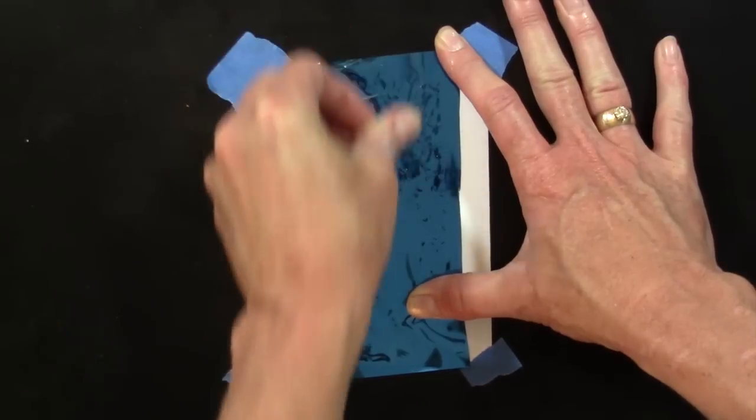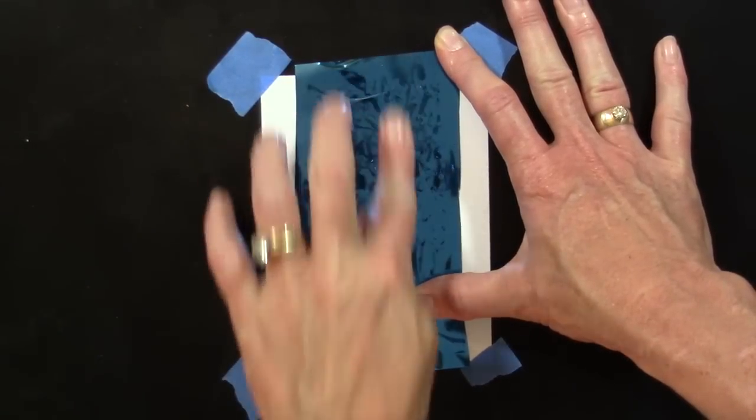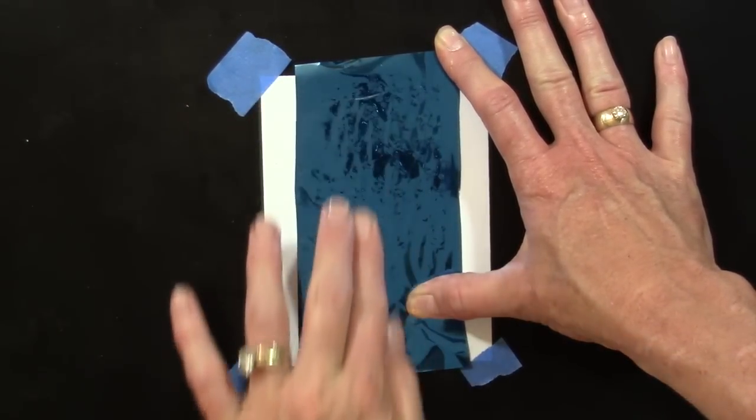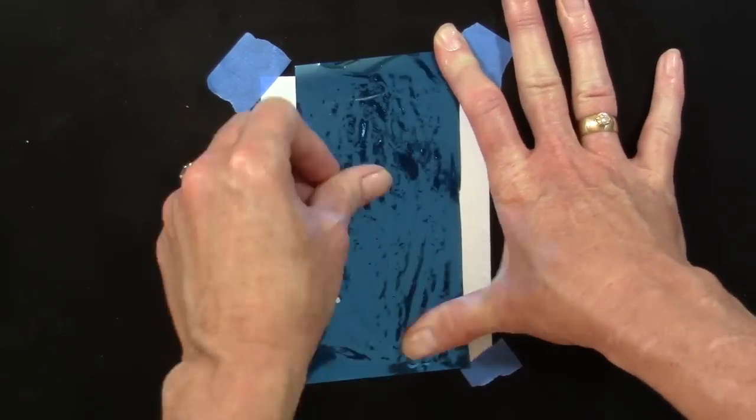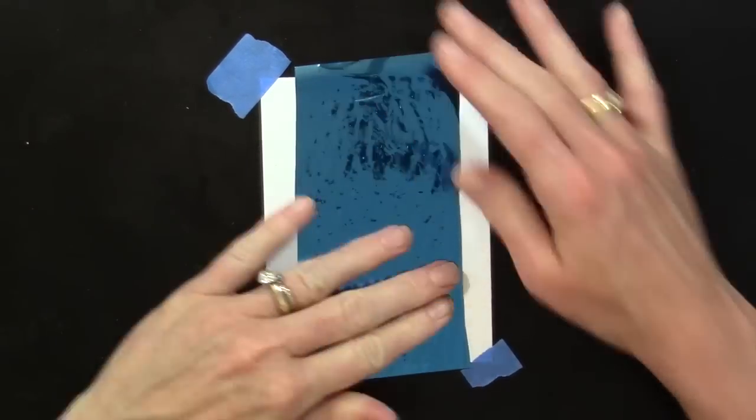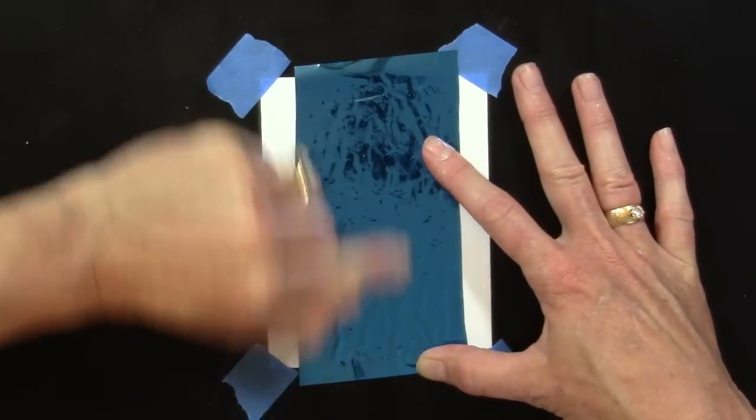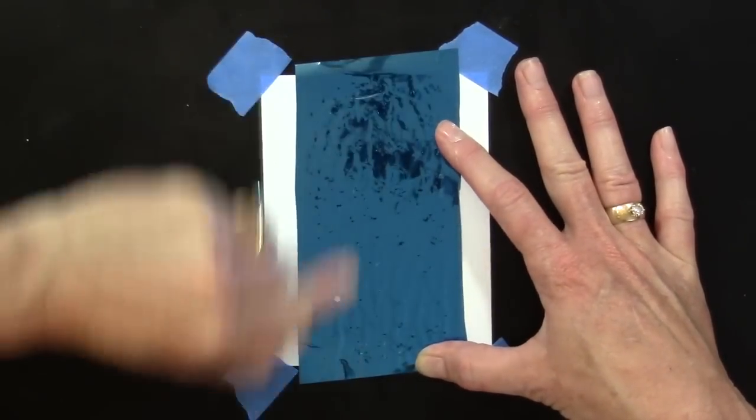Begin gently rubbing over the top of the deco foil to reveal the stenciled area. Continue rubbing until the entire stencil is revealed.